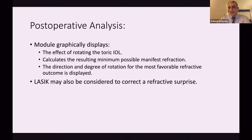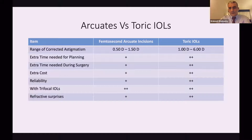This is a brief comparison between femtosecond arcuate incision versus TORIC IOL. TORIC IOL is much more expensive and needs extra time and extra planning. However, it gives a wider range of correction and is more reliable in correction of astigmatism.